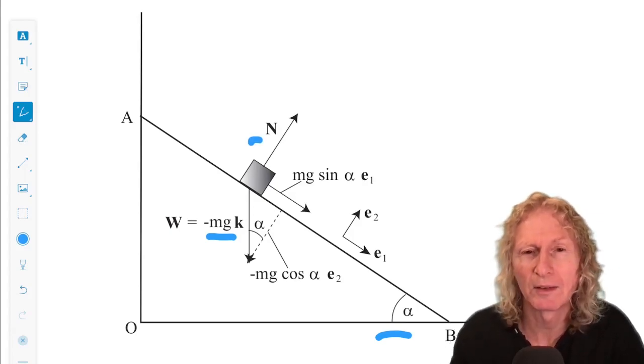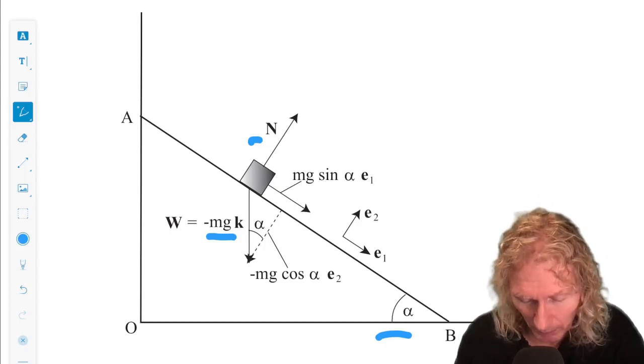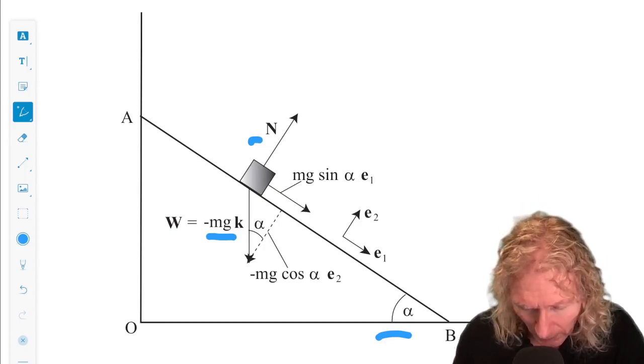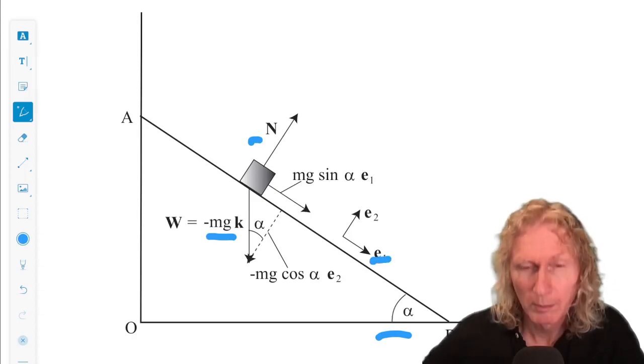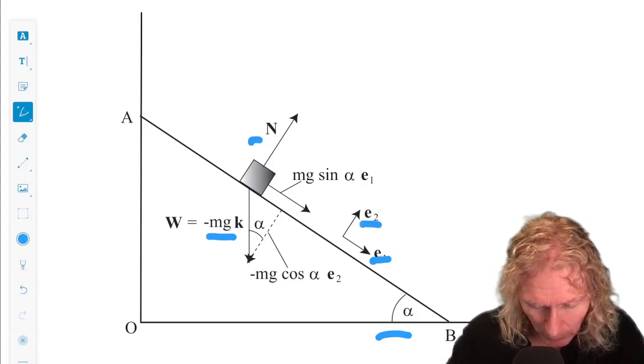Now it's going to be convenient to pick a different coordinate system, one that is parallel to the motion, we'll call that e1, and normal to the motion, we'll call that e2.